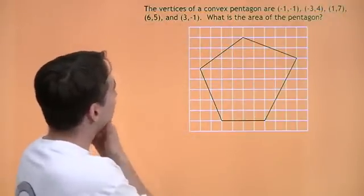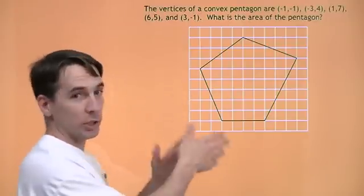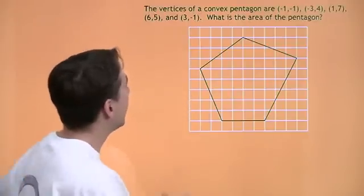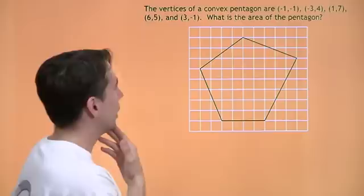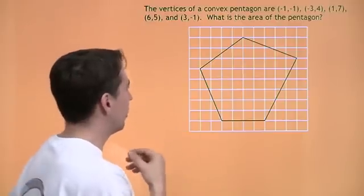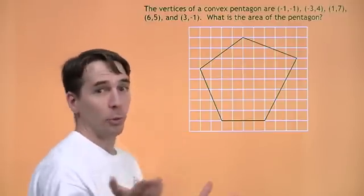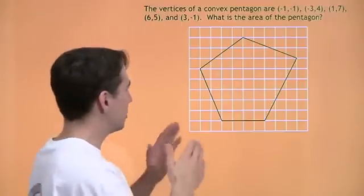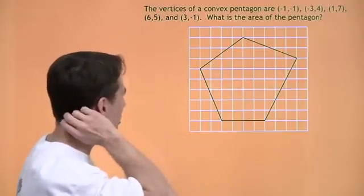All right. Here we go. Vertices of a convex pentagon. They give us the vertices. Fortunately, they drew it for us, so we don't have to do that. We have to find the area of this pentagon. I don't know any formulas for the area of such a wacky shape. Now, usually what I do on this is I try to break it up into pieces I know how to deal with.